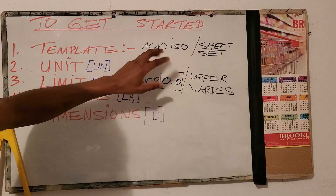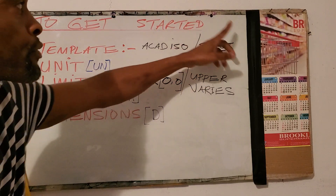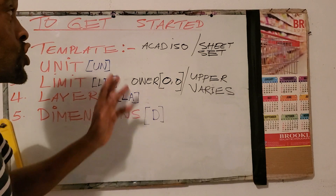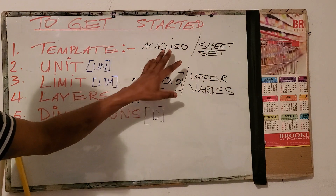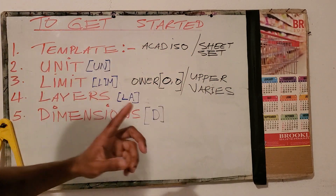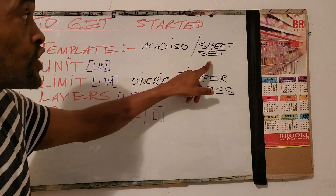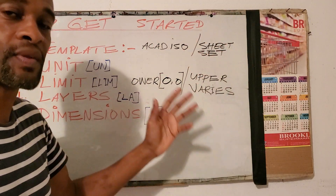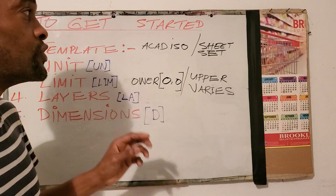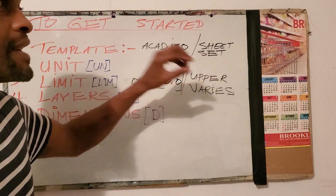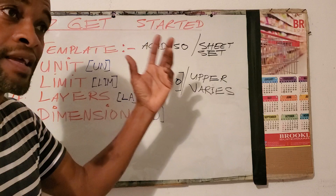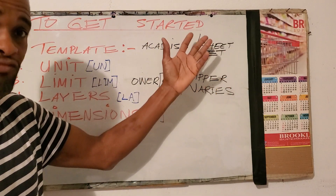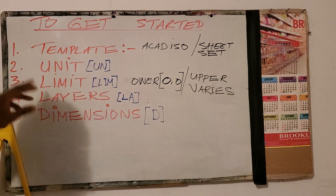The difference between sheet sets and ACAD ISO or ACAD is that sheet sets are pre-bordered. So in that case you don't need to do any title block. It's important to note as well that with sheet sets you can customize the pre-border, or you can explore it and delete, insert, or modify as required.